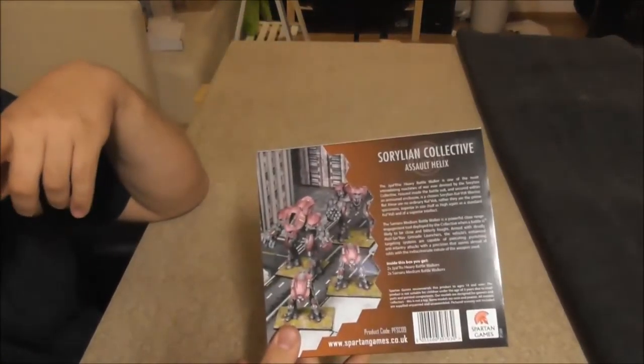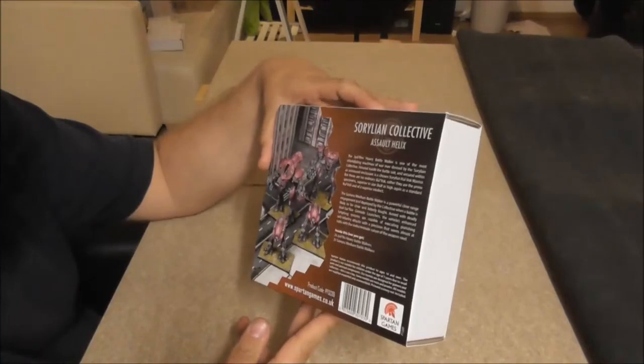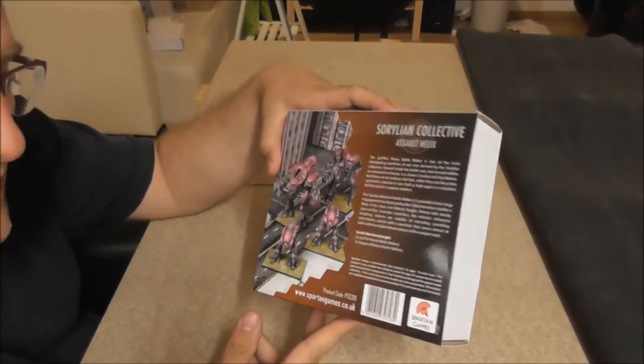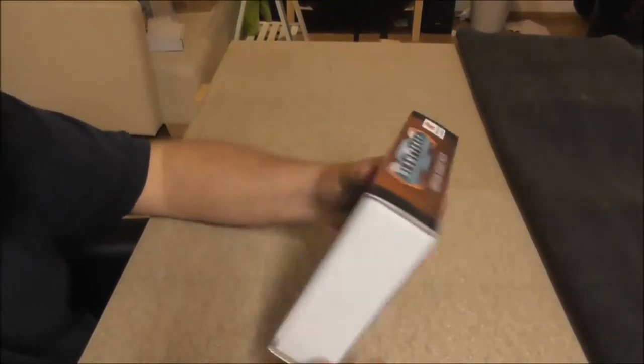What's inside? Just four models, the others had five. Two of the big walkers, that's the yellow heavy battle walker and then two Samaro medium battle walkers. These are quite similar to the ones we already know from the core box.